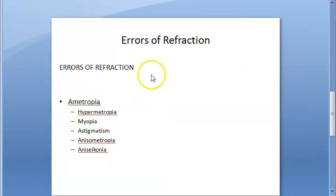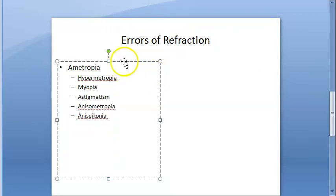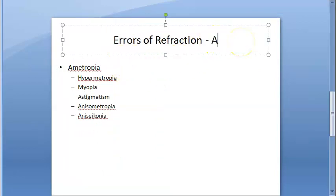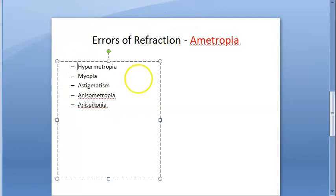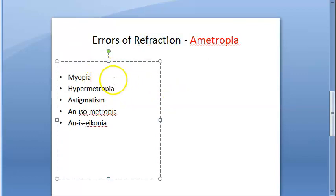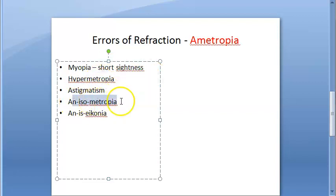Now let us move on to the refractive errors — errors of refraction. This is called ametropia, which means something is wrong with the vision. What can be wrong? There can be myopia, hypermetropia, astigmatism, anisometropia, and aniseikonia. So these are the errors of refraction.